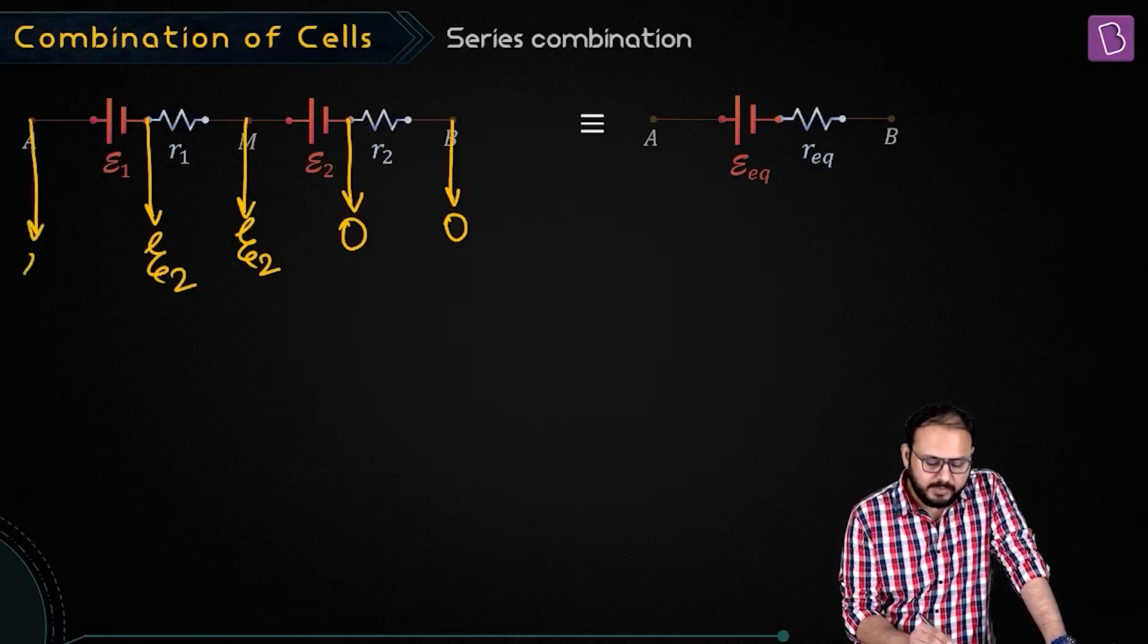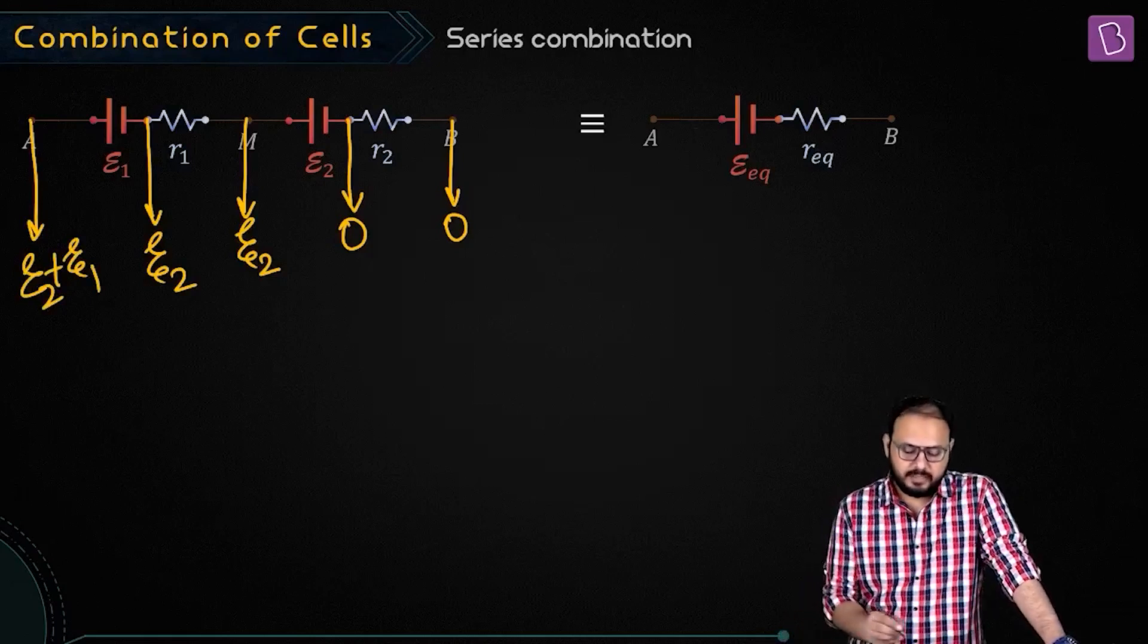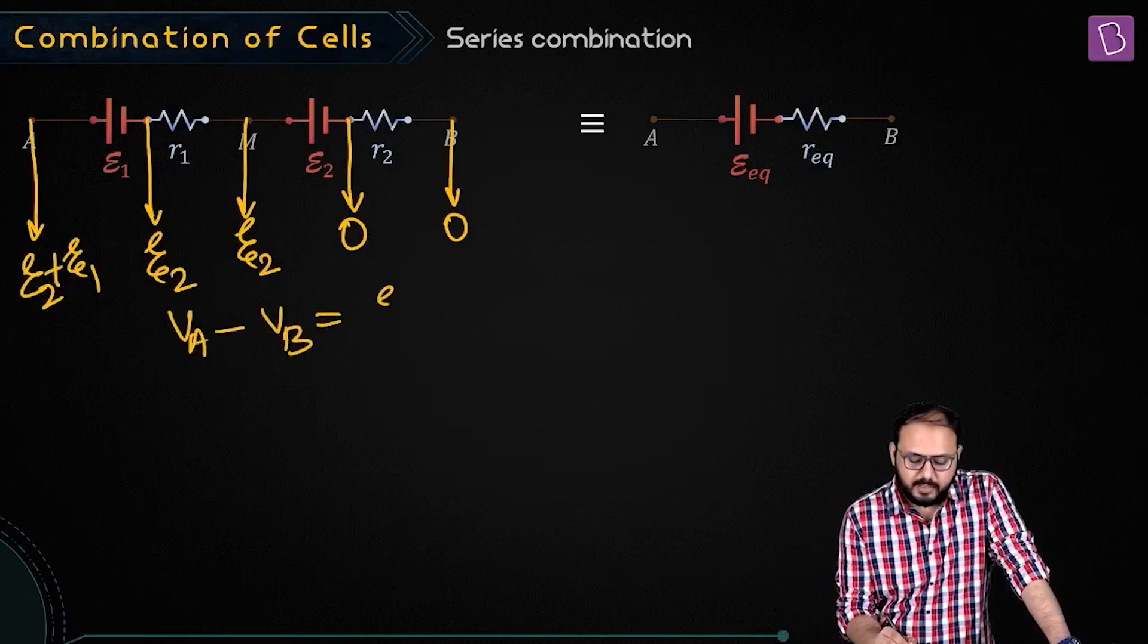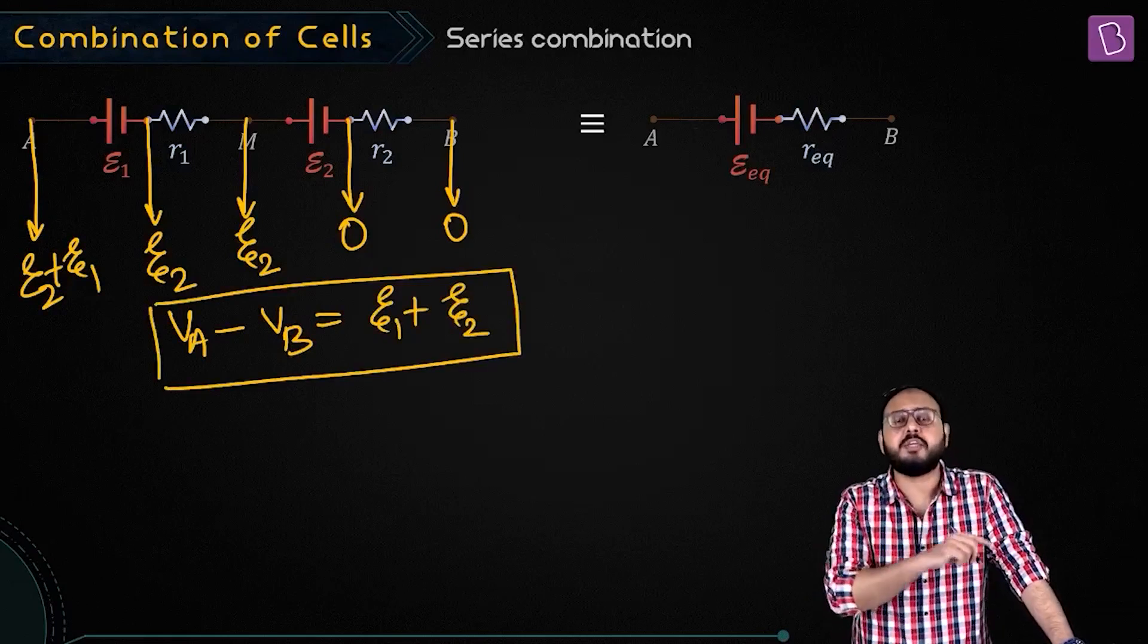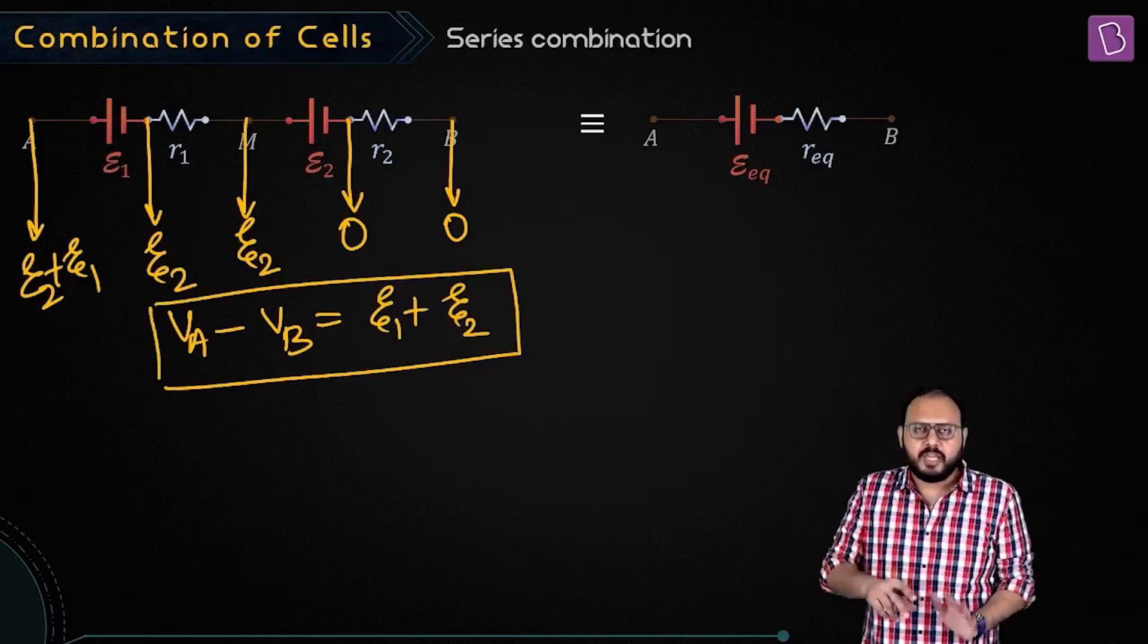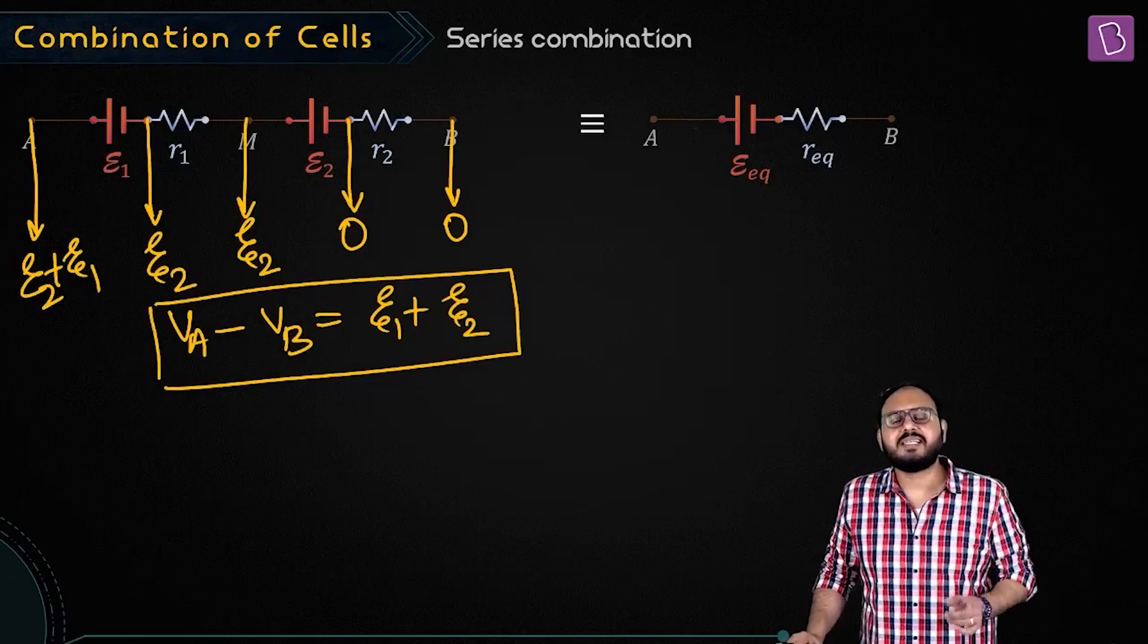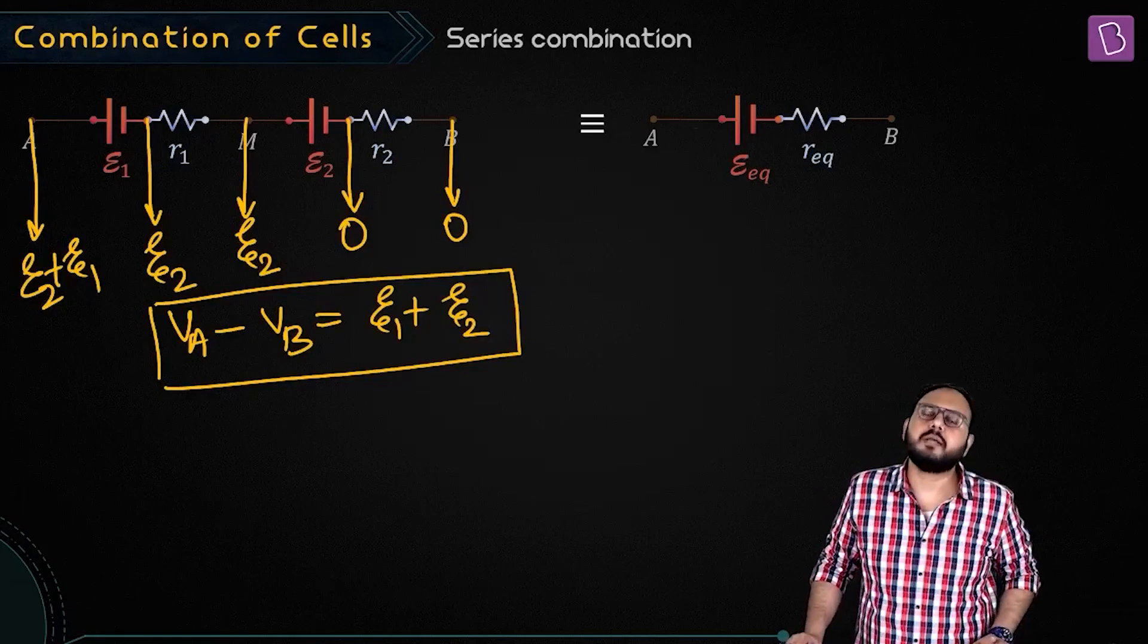And this becomes E2 plus E1. What I am suggesting is that VA minus VB equals E1 plus E2 when the cells are not being used. I will repeat: VA minus VB equals E1 plus E2 when the cells are not being used. What is that definition? Equivalent EMF.